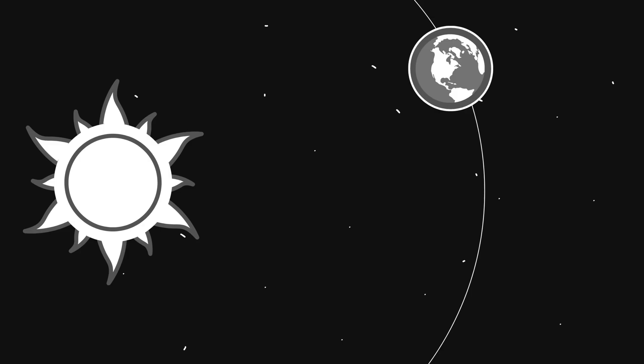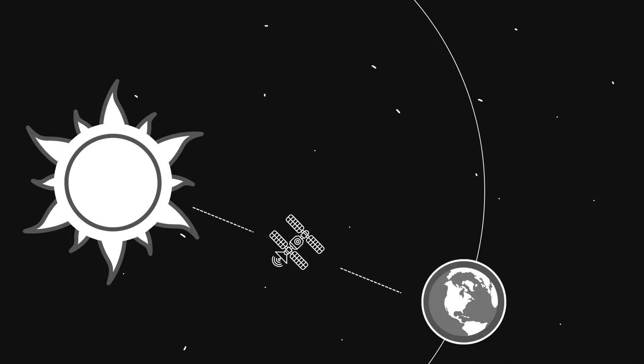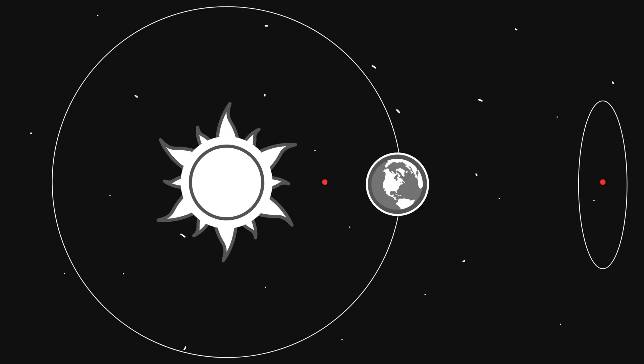And since the Earth is moving around the sun, these points move with it. So when a spacecraft parks there, it basically rides along with Earth. There are five of these parking spots. Scientists call them L1 to L5.